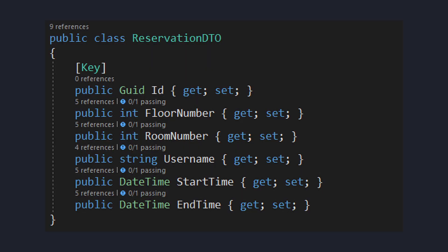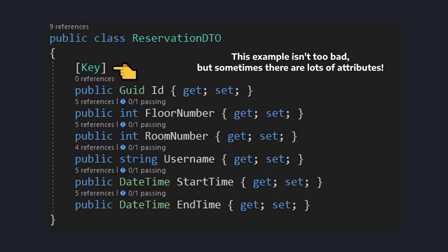Another benefit of having a separate model class and DTO is that you're not going to be cluttering a single class with attributes that might only be related to either a DTO or your domain object. A good example is Entity Framework attributes such as the key attribute, the required attribute, or other validation attributes. Instead of cluttering your model with those, you can just apply them to your separate DTO class.